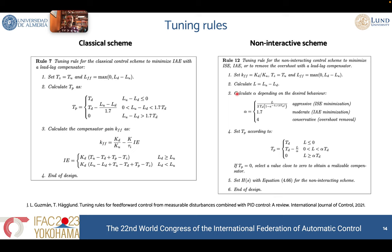On the other hand, for the non-interactive control scheme, we also developed a very interesting rule where we fix the gain — it's not necessary to reduce it because we don't have that interaction between the two controllers. We fix the zero and only tune the pole to achieve a different objective: integral square error minimization, integral absolute error minimization, or just to remove the overshoot.